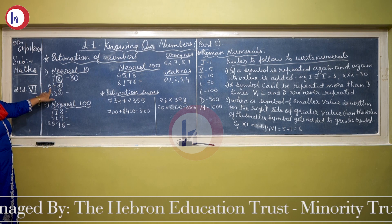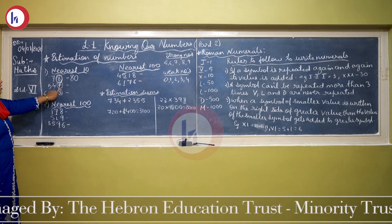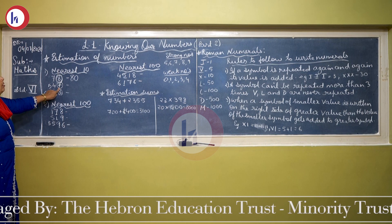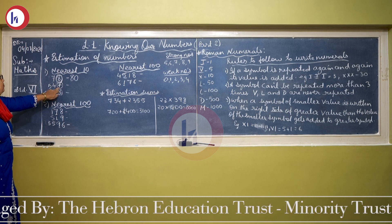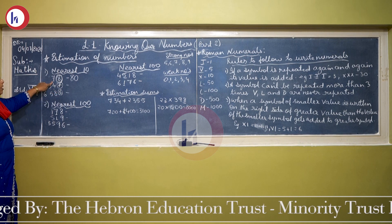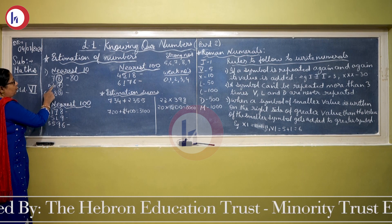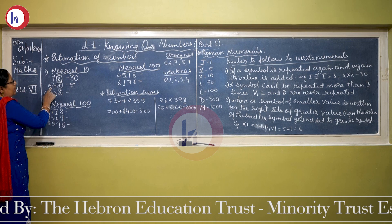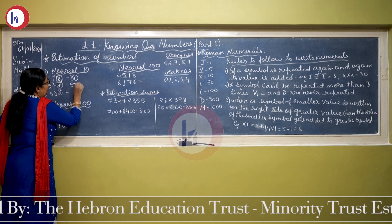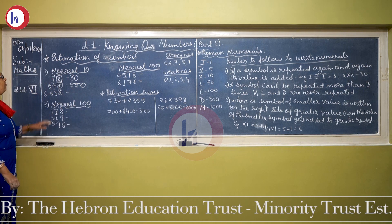Same way, the second example is 547. In the units place is 7 — again a strong number. So 1 will be added to the number in the tens place. Here 4 becomes 5, and 7 is replaced by 0. So 547 is nearest to 550.